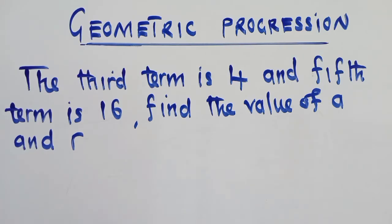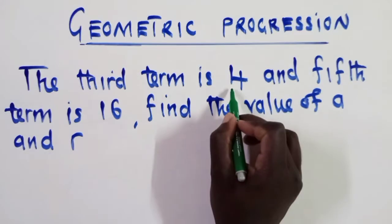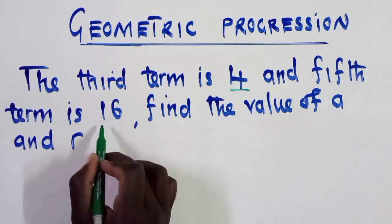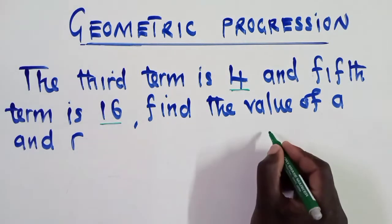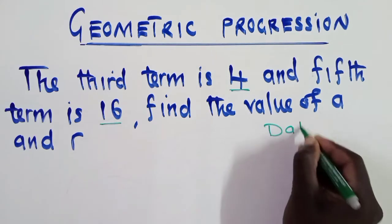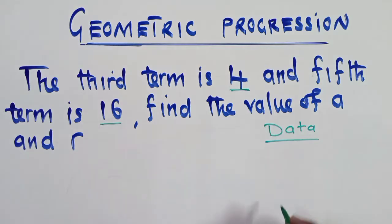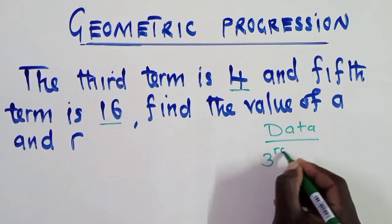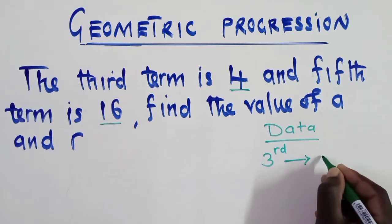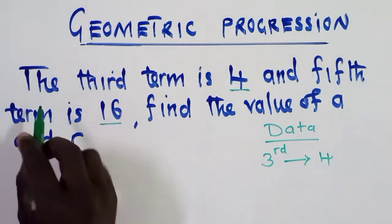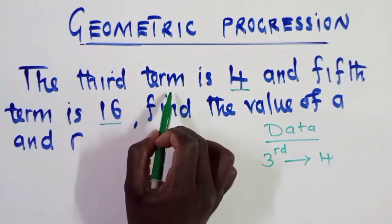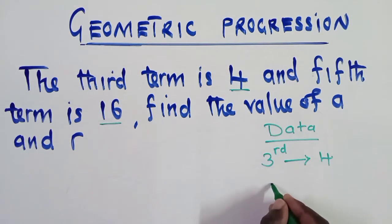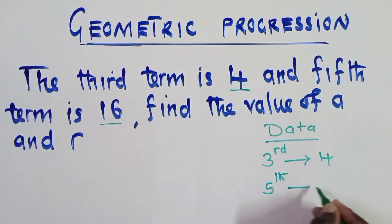We've got this question where we've been given two terms. The third term is 4 and the fifth term is 16. Let's put up our data. The third term is 4, and the fifth term is 16. This must be your first step — whenever you're given a question like this, you identify the terms.